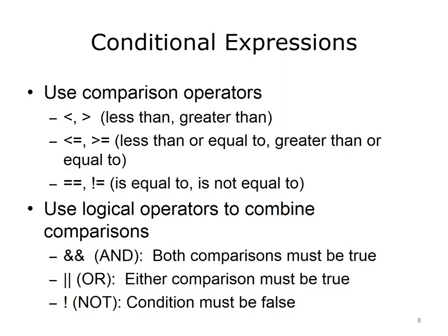If statements use conditions, which are expressions that are made up of comparisons. If there are multiple comparisons, they are combined using what are called logical operators. The comparison operators that can be used are less than or greater than, less than or equal to, greater than or equal to, equal to, or not equal to. Note that the equality operator in Java is a double equal sign. Recall that a single equal sign is the assignment operator. Not equal to is an exclamation point followed by a single equal sign. If there are multiple comparisons within a single condition, they are combined using logical operators. The logical operator AND is double ampersands in Java — both comparisons must be true for it to evaluate to true. The logical operator OR is represented by two vertical lines; it is true when just one or both comparisons are true. The NOT operator is the exclamation point, and it evaluates to true when the comparison is false.